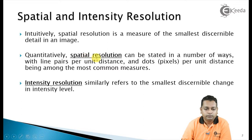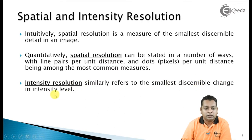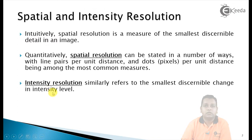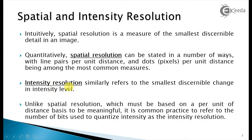Along with spatial resolution, we have another term: intensity resolution. This similarly refers to the smallest discernible change in the intensity level. With more discrete levels of intensity, we can separate out the various portions of the image with good intensity change. Unlike spatial resolution, which must be stated on a per unit distance basis, it is common practice to refer to the number of bits used to quantize intensity as the intensity resolution.